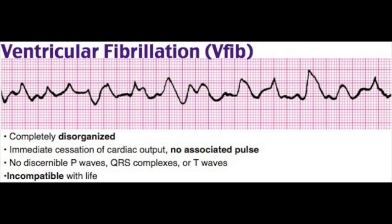Torsades management: first line — IV magnesium sulfate, which suppresses early afterdepolarizations and terminates the arrhythmia. Magnesium is effective for both terminating and preventing recurrent torsades. Correct underlying electrolyte abnormalities — note that potassium may not correct until magnesium is corrected first. Discontinue all QT-prolonging drugs. For refractory cases, use isoproterenol and transvenous overdrive pacing.